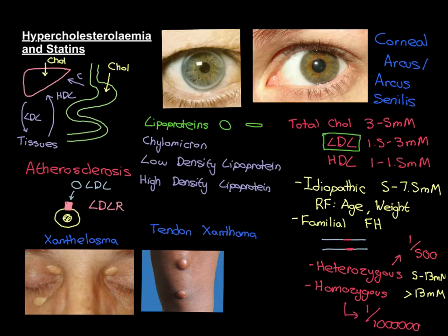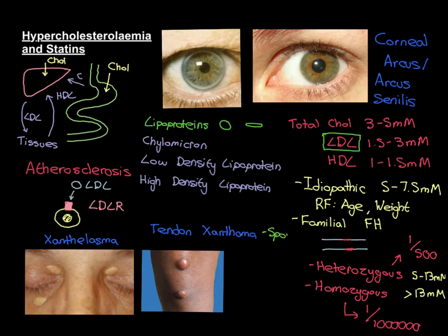Let's say that we have an individual who has FH. There are actually two ways in which that individual could have got this genetic disease. The first is obvious - they could have inherited it from their parents. The second is less obvious, which is that they could have been a sporadic case. This is a really important learning point because if you have an individual with FH, it does not necessarily mean that at least one of their parents has to also have FH, because they could have been a sporadic case.